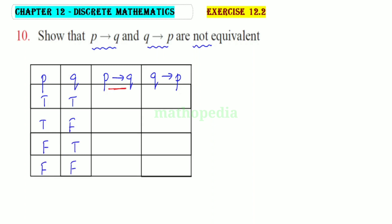For 'if p then q': when p is true and q is false, it is false; otherwise the values follow the standard conditional. For 'if q then p': the corresponding truth values are filled in accordingly — resulting in false and true in the respective rows.